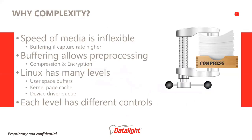The direct path is simple, but processing data at the speed of the media is also extremely inflexible. To handle cases where data is captured at a higher rate than the media can handle, some sort of buffering solution must be used. Those same buffers can also allow the data to be pre-processed, including compression and encryption, allowing data gathering to be completely separate from data storage. In Linux, memory is segregated into kernel space and user space, each containing buffers of various types.